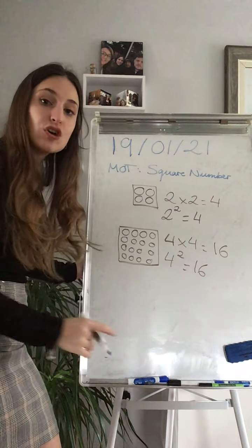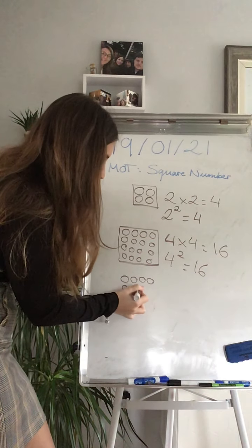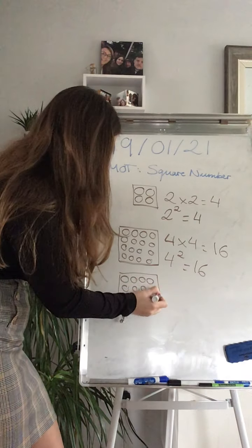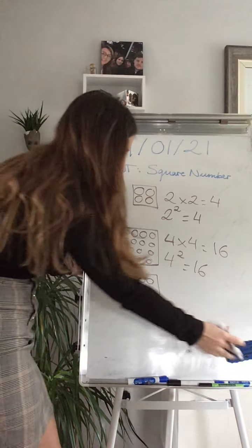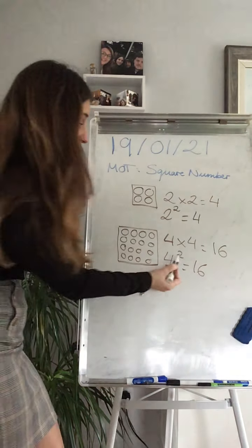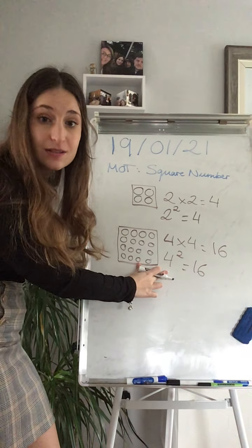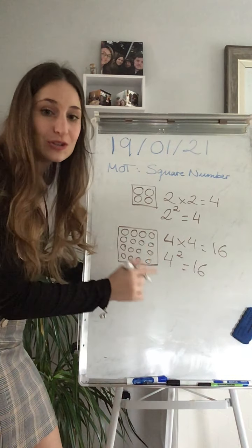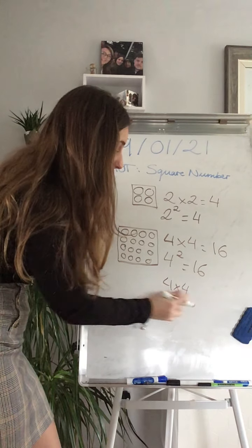Remember that this is not 4 times 2 because 4 times 2 will look like this. Is this a square? No. This is a rectangle because this side is longer. So when you say 4 square, that is 4 times itself. So 2 times that number. Not 2 times this number. That number multiplied itself twice. Can you see? One 4 and another 4.